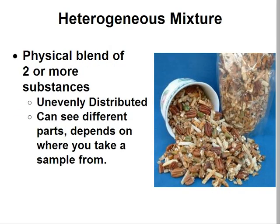A heterogeneous mixture is a physical blend of two or more substances that is unevenly distributed. You can see different parts of the mixture in the picture to the right, which shows trail mix. I see nuts, pretzels, peanuts, and rice puffs as well. There are several things blended together, and it appears not as one — it appears as many different things. So a heterogeneous mixture is a physical blend that is unevenly distributed with many visible parts and does not appear as one.